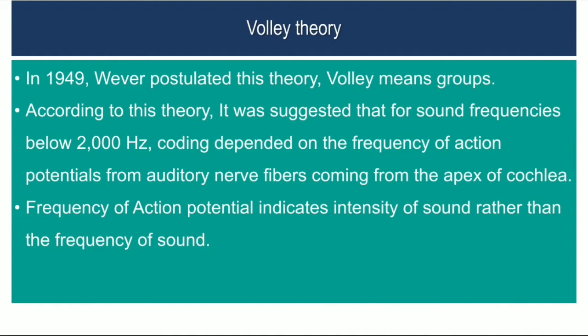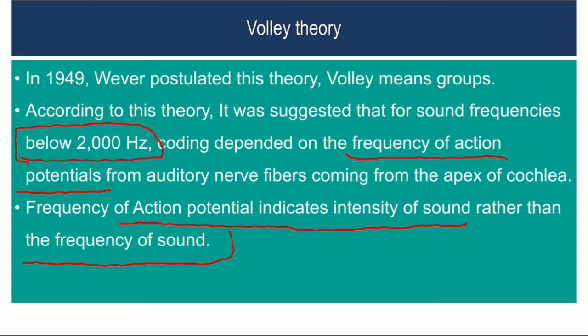Next is the volley theory, postulated in 1949. Volley means groups. According to this theory, it is suggested for sound frequencies below 2000 Hz — coding depends on the frequency of action potentials from auditory nerve fibers coming from the cochlea. The frequency of action potentials indicates the intensity of sound rather than the frequency of sound itself. The amount of frequency is determined by how many action potentials are reaching the auditory cortex.